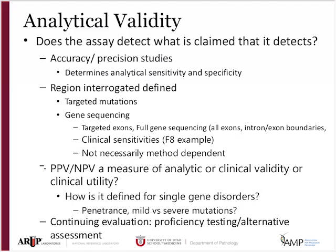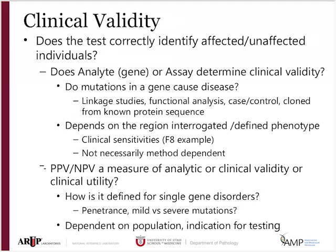Once we start talking about clinical validity, people define this a bit differently. Broadly, I look at clinical validity as: does the test correctly identify affected or unaffected individuals? My question is whether it's the analyte or the assay that determines clinical validity. In my mind, for inherited diseases it would be demonstrating that mutations in this gene do cause this disease — and then whether you identify them by Sanger sequencing or targeted mutation analysis, that validity that gene mutations really do cause this disease is how I describe clinical validity.